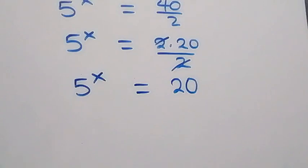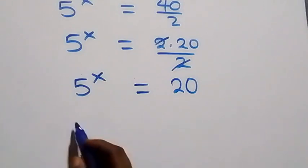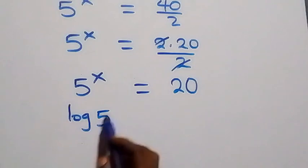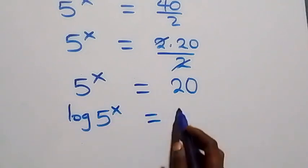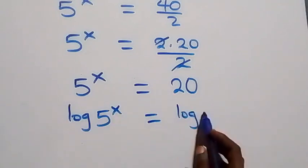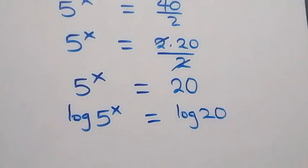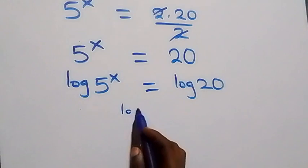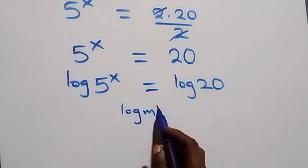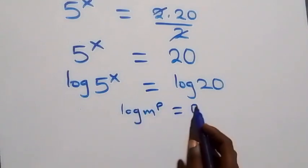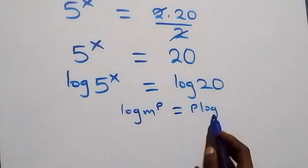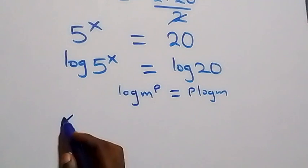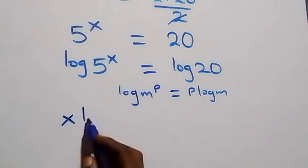The next step: we take the log on both sides. We have log of 5 raised to the power x equals log 20. We then apply the power rule of logarithms: log of m raised to power p is the same as p times log m. This gives us x times log 5.